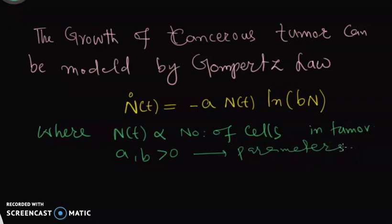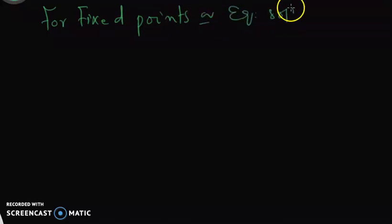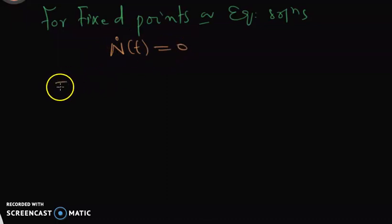Our task is to find the fixed points or equilibrium points, and then we will see what is happening in the long run. It seems difficult to solve analytically, but actually it's simple to solve — we can solve it analytically later on. So let's first find the fixed points. For equilibrium solutions, we will set the time derivative to zero, which gives us this equation.